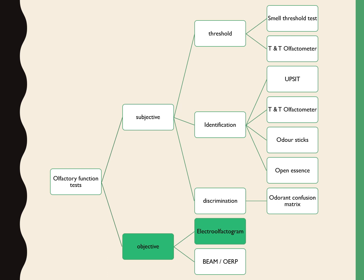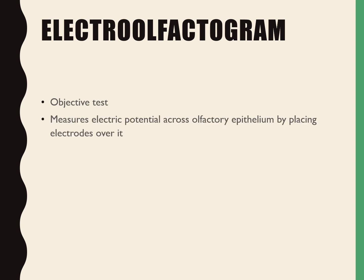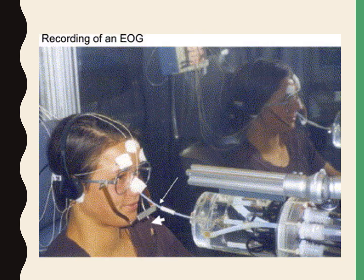Coming to objective tests, the first is the electro-olfactogram. It measures electric potential across the olfactory epithelium by placing electrodes over it. When an odorant stimulates the receptor cell, a slow negative sweeping voltage is seen. This is the recording of the electro-olfactogram.